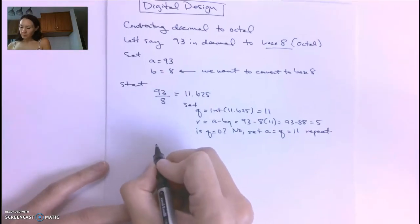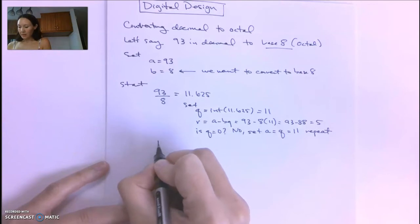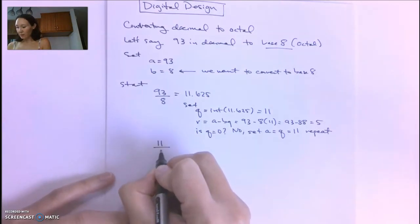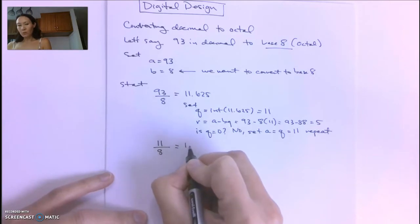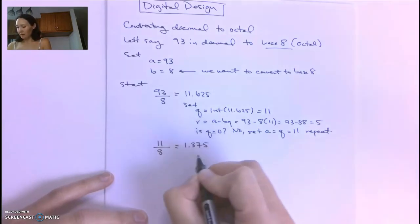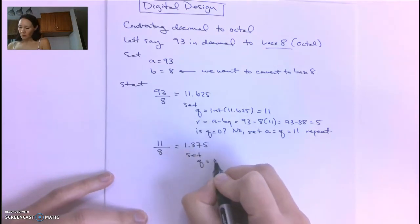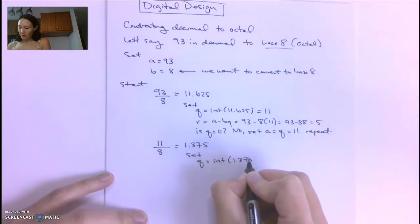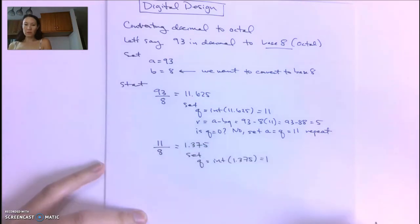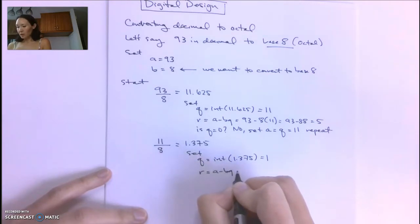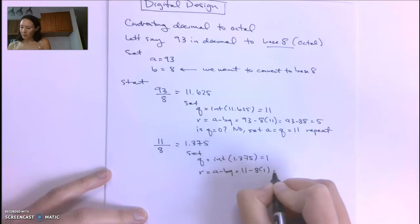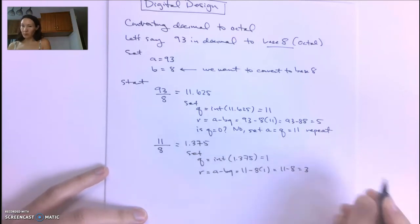Now that A is 11, we take 11 and divide by B, which is still 8. So 11 divided by 8 is 1.375. We set Q equal to the integer part of 1.375, which is 1. Then we set the remainder R to A minus BQ, which is 11 minus 8 times 1, or 11 minus 8, which equals 3.